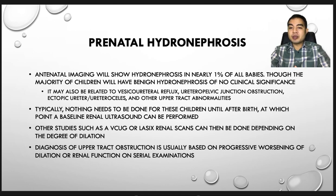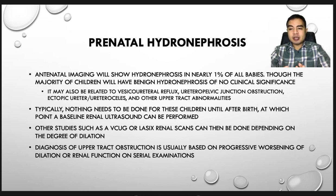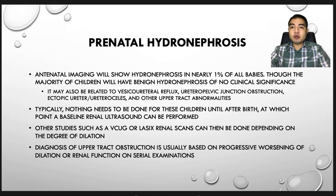Typically, nothing needs to be done for these children until after birth, at which point a baseline renal ultrasound can be performed. Other studies such as VCUG or MAG3 diuretic renal scan can then be done depending on the degree of dilatation. Diagnosis of upper tract obstruction is usually based on progressive worsening of dilatation or renal function on serial examination.